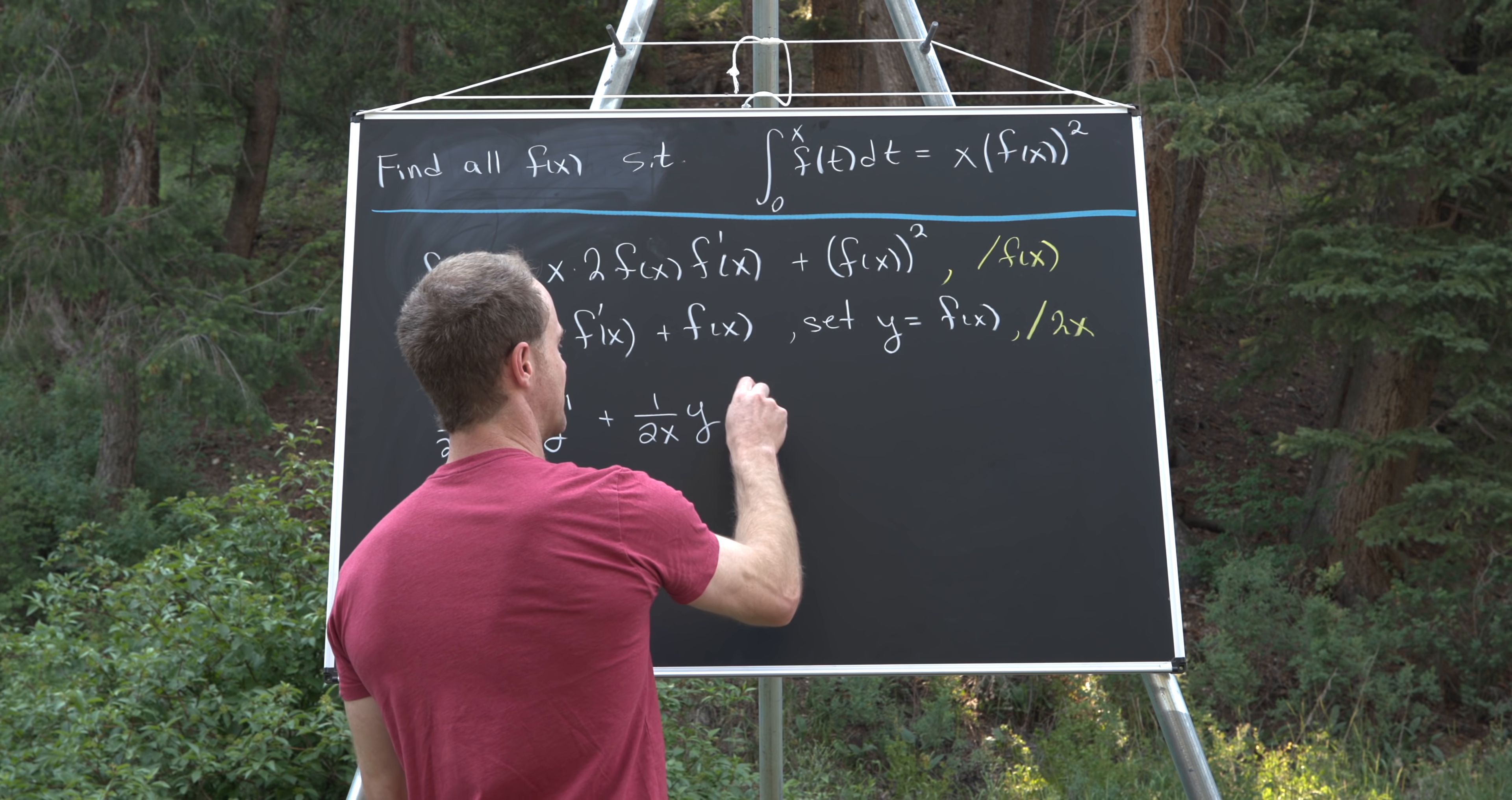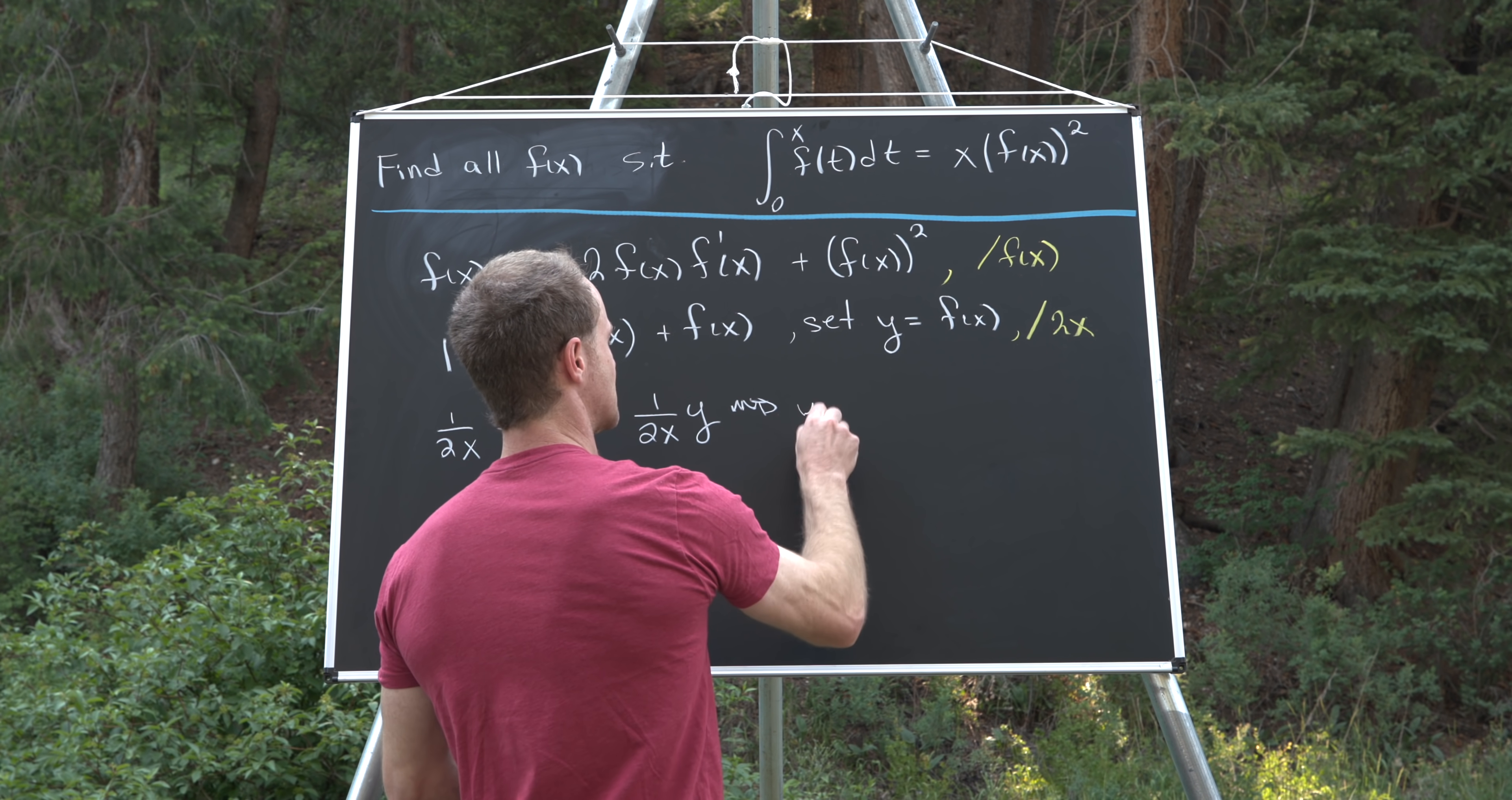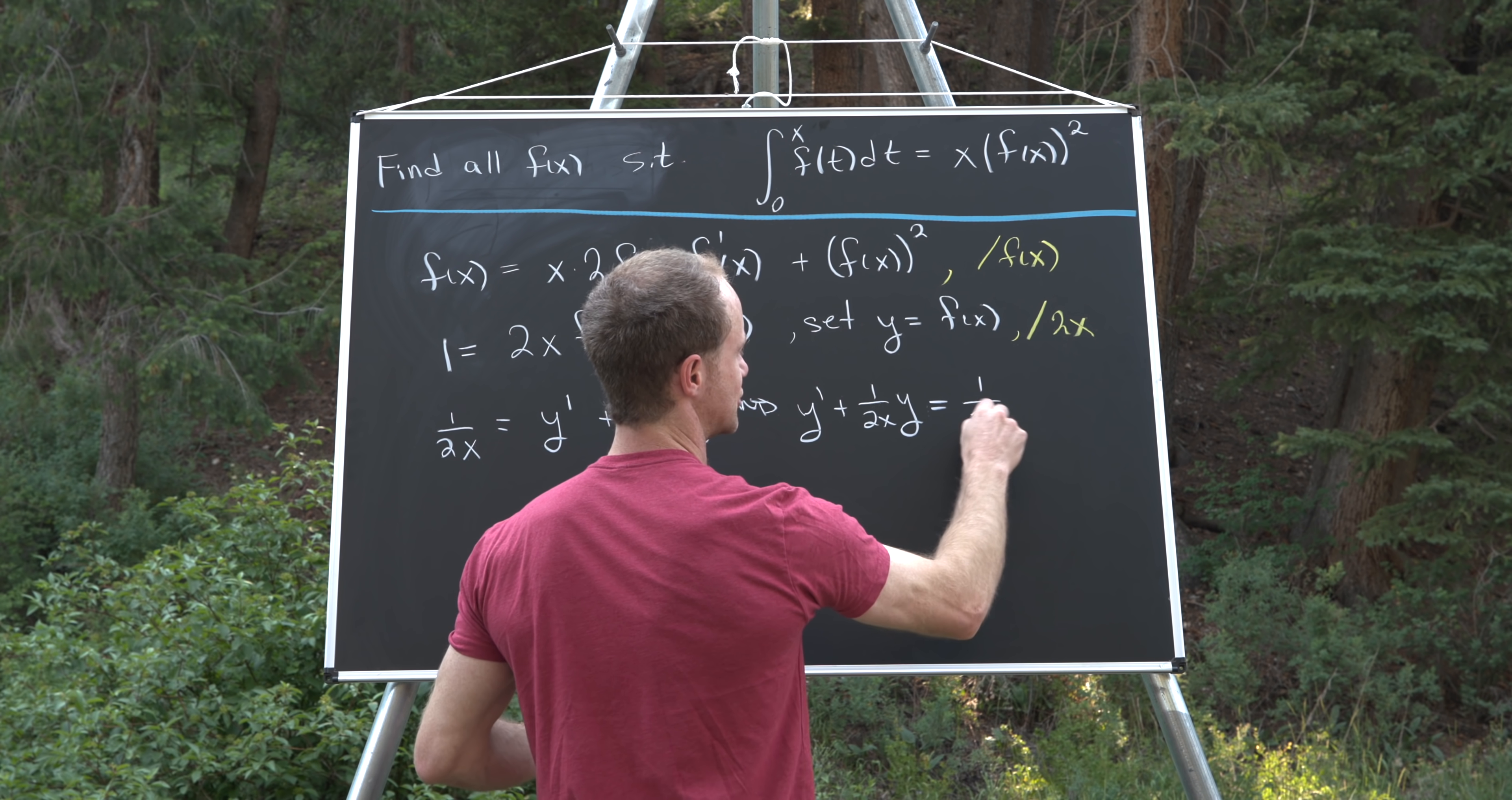But now if we were to rewrite that a little bit, like change the order around, we would see that this is equal to y prime plus 1 over 2x times y equals 1 over 2x.